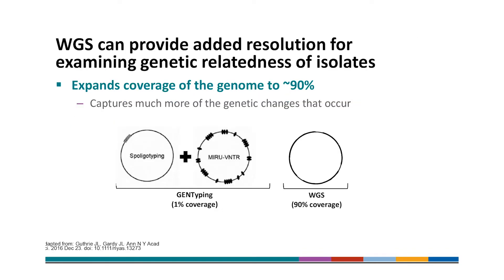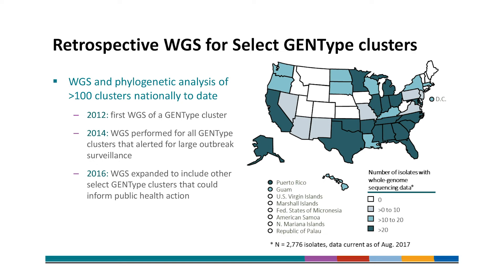WGS can provide added resolution for examining genetic relatedness of isolates by expanding coverage of the genome to about 90%, compared to the 1% that is covered by genotyping. This captures much more of the genetic changes that occur. CDC has been performing WGS and phylogenetic analysis retrospectively for select genotype clusters and has analyzed more than 100 clusters nationally to date. 2012 is when we first did WGS of a genotype cluster. In 2014, we started performing WGS for all genotype clusters that alerted for large outbreak surveillance. In 2016, we expanded WGS capacity to include other select genotype clusters that could inform public health. This map is showing the number of isolates with whole genome sequencing data for each state or territory, with a total of 2,776 isolates having been sequenced as of August 2017, but retrospective sequencing is still ongoing.